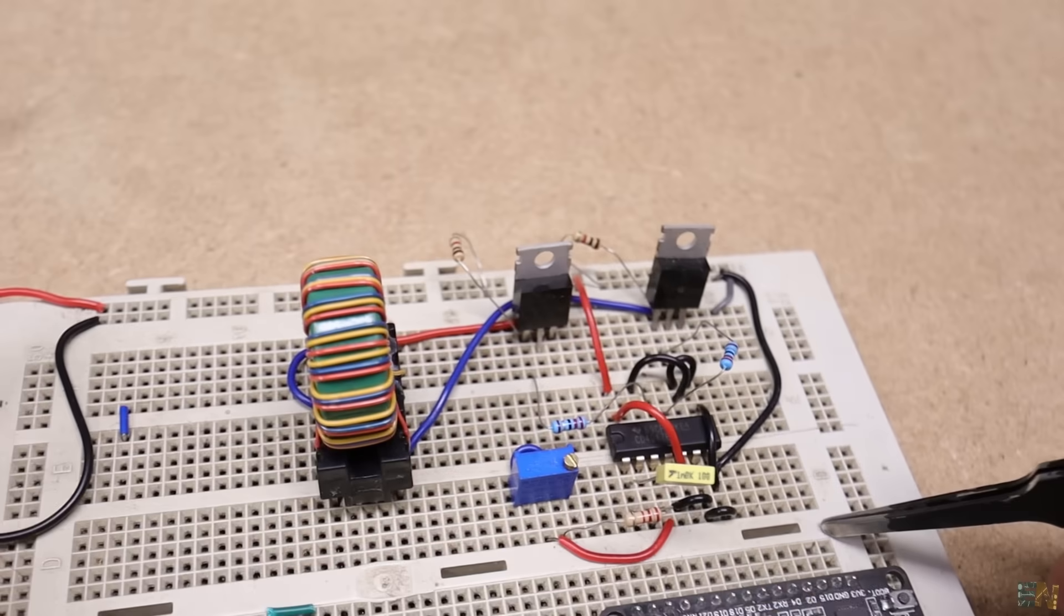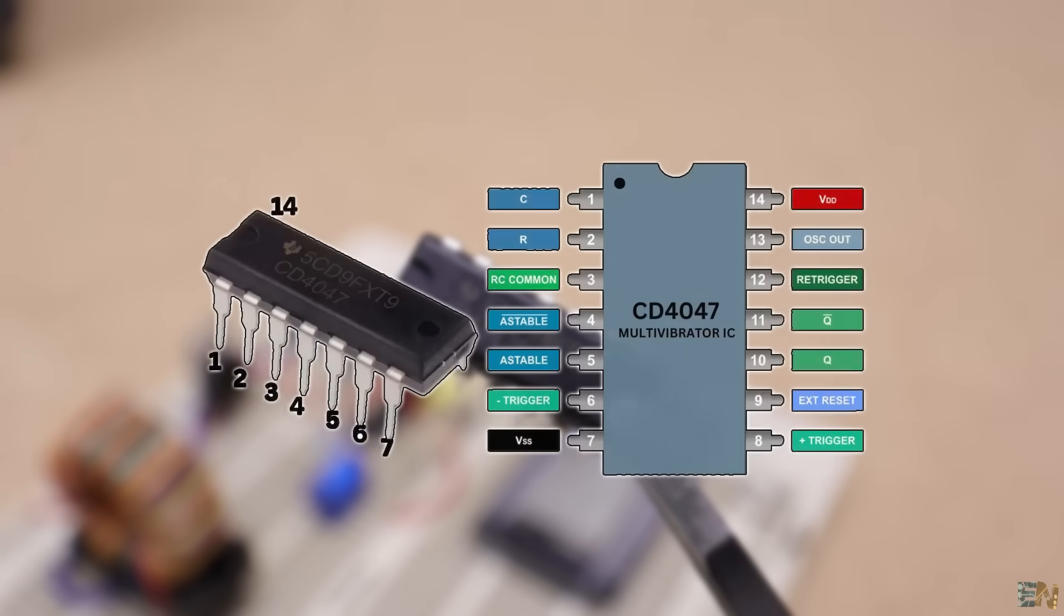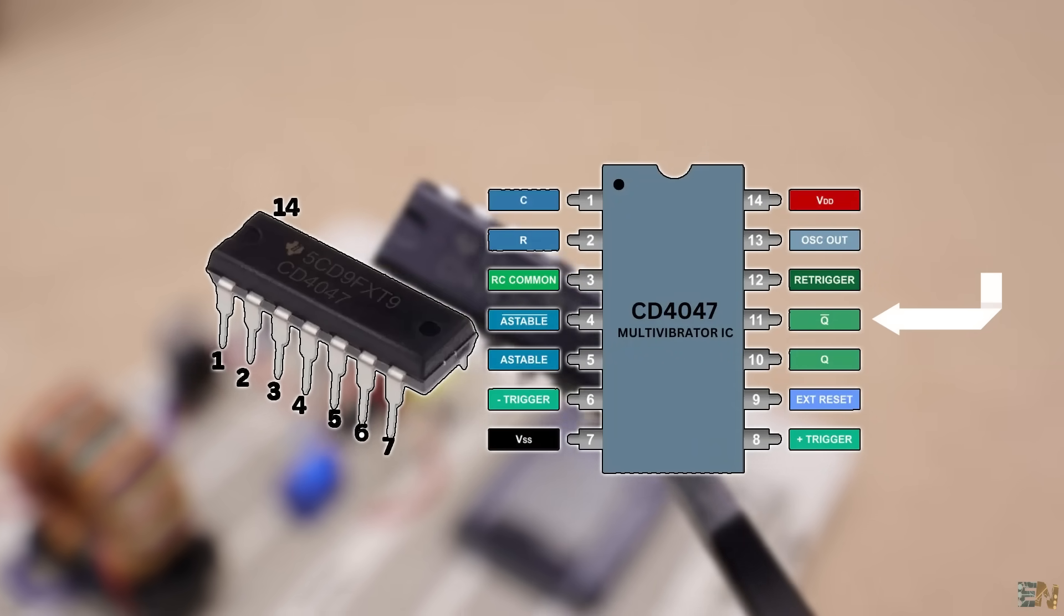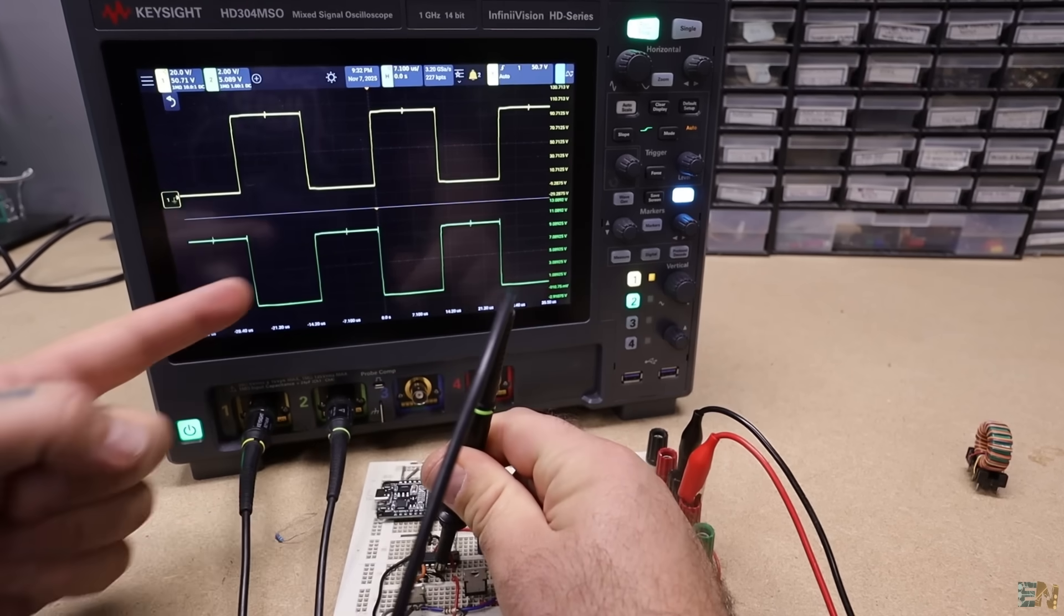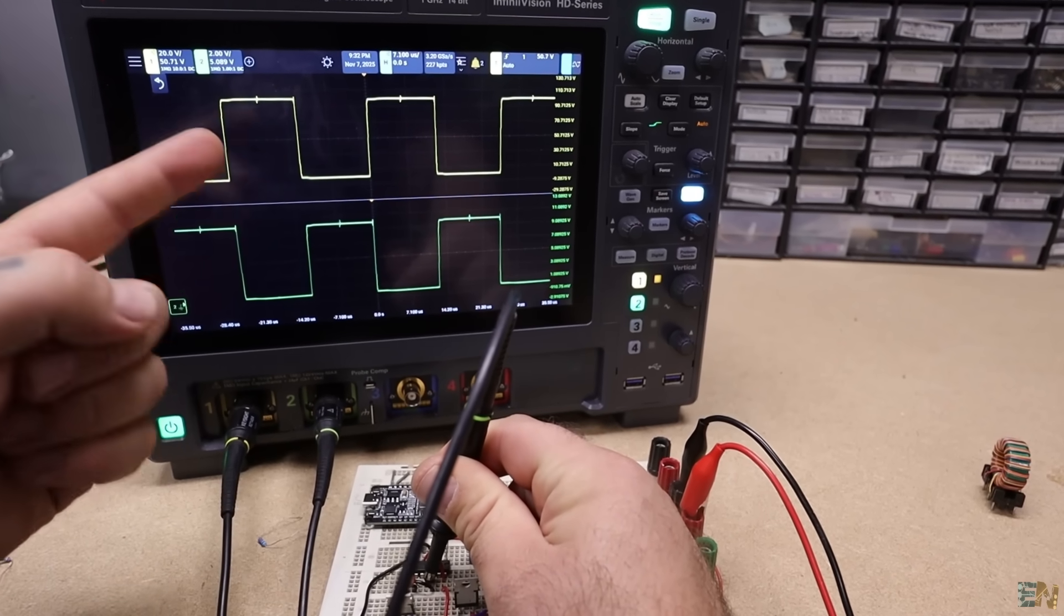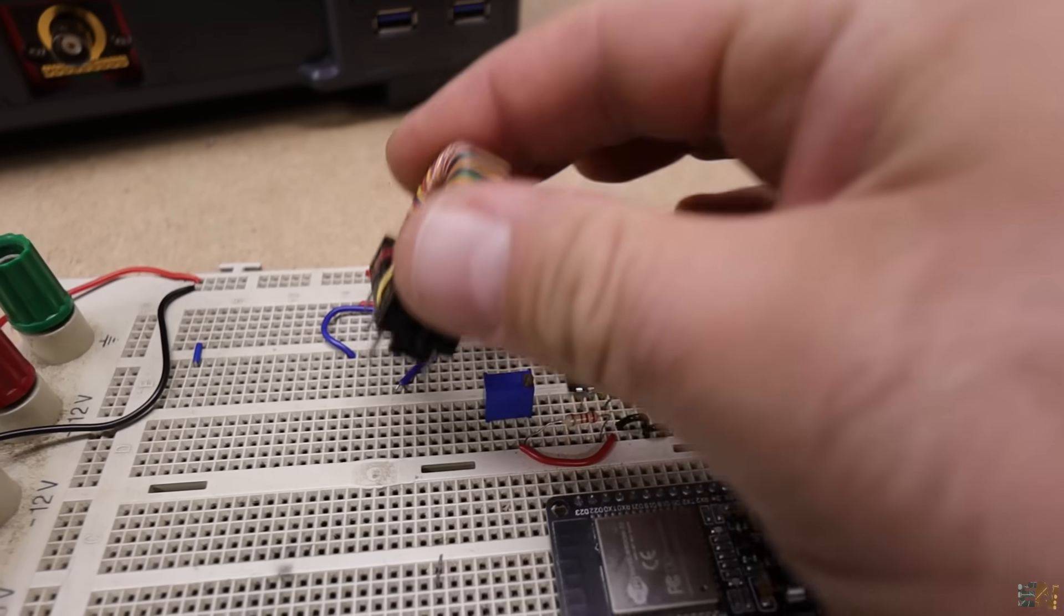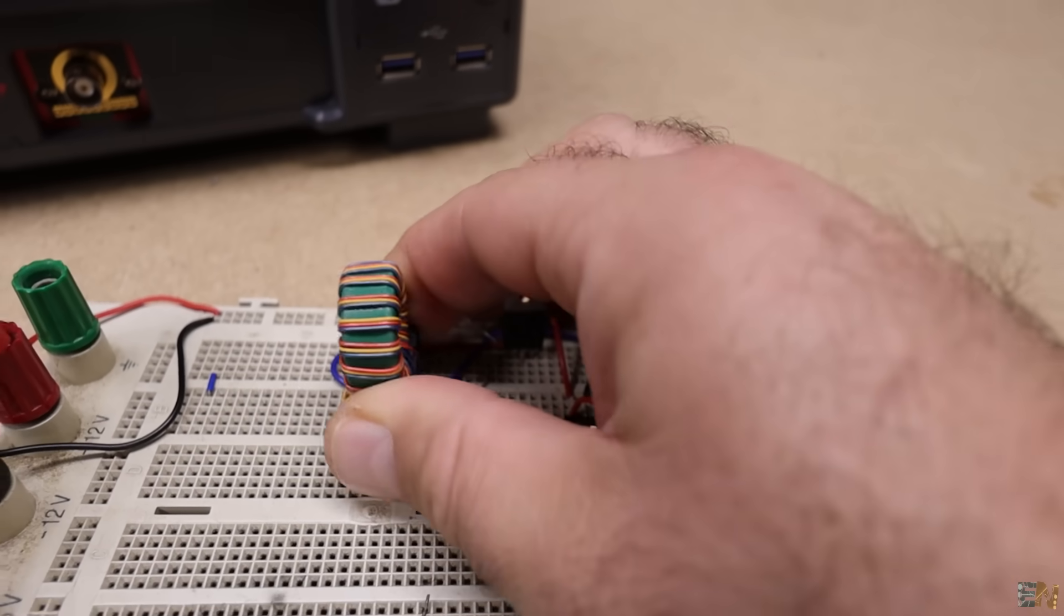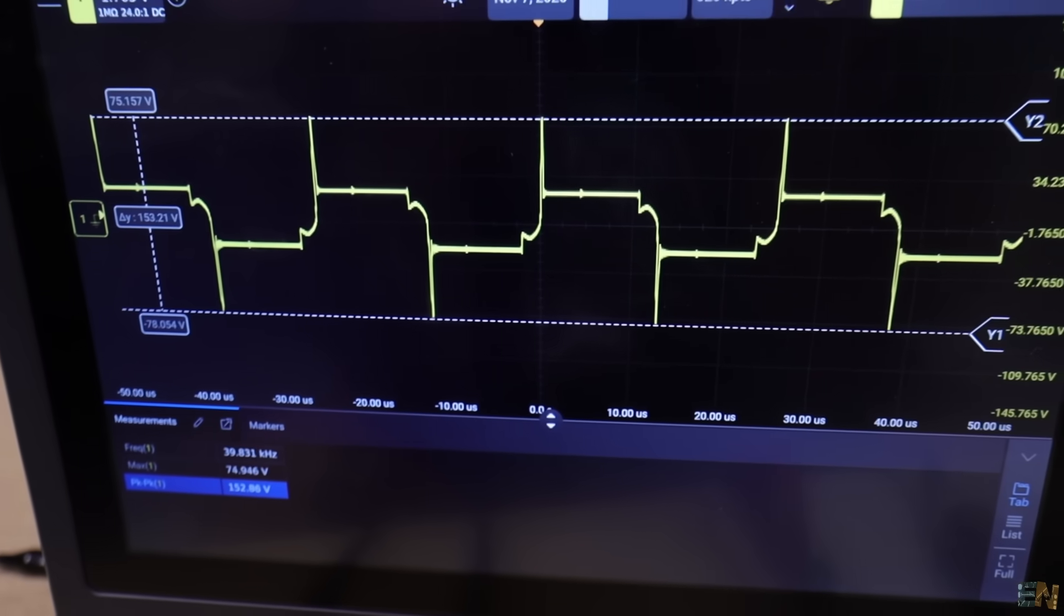The good part of using the CD4047 is that it already has an inverted output and is more, it could work directly with 12V so it's perfect for driving my MOSFETs or BJT resistors. So I've connected my circuit to the transformer and the transistors and now I have around 155V peak to peak AC signal of 40kHz as you can see right now on the scope.